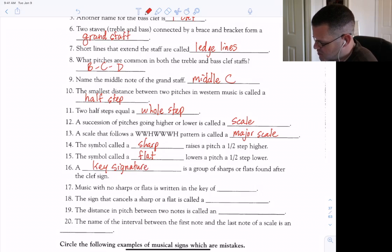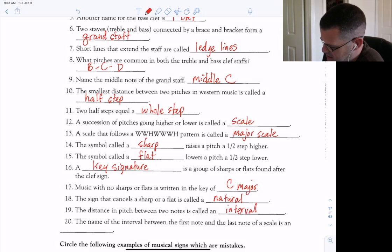Music with no sharps or flats is written in the key of C major. The sign that cancels a sharp or flat is called a natural. The distance in pitch between two notes is called an interval. The name of the interval between the first note and the last note of the scale is an octave.